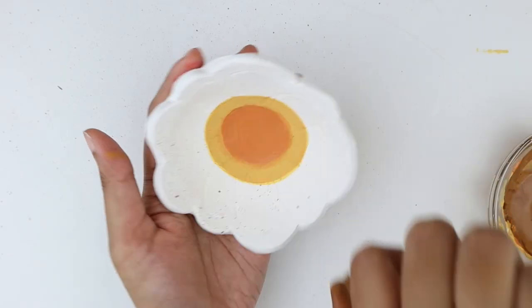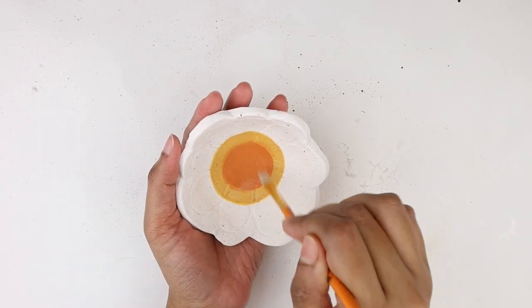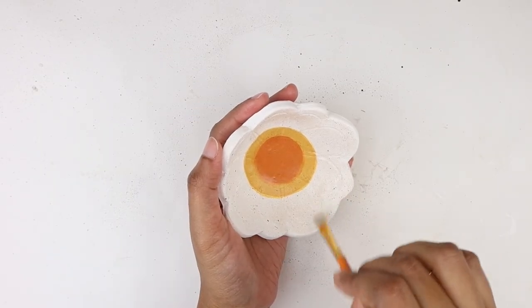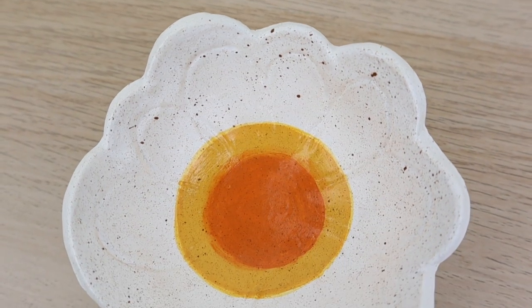To seal the paint, I'm going to be applying a coat of this polyurethane varnish. This will also give a satin finish to the piece. This is how our Urban Outfitters inspired flower bowl is looking. You can use it to hold jewelry pieces or house keys.